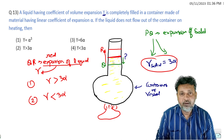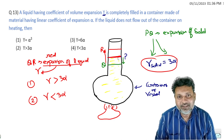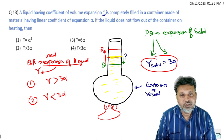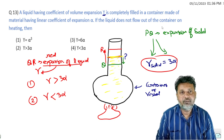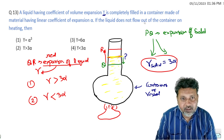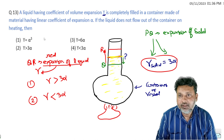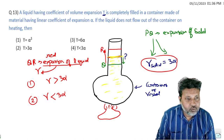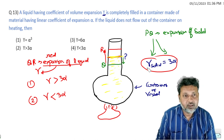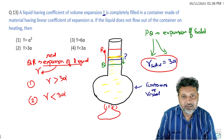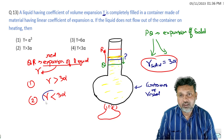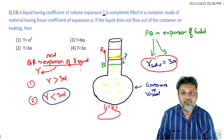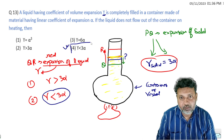पानी flow करके बाहर जा रहा - इस level से ऊपर चला जा रहा मतलब flow कर जा रहा बाहर। तो condition है: if the liquid does not flow out on heating, liquid बाहर नहीं जा रहा, इस level पे ही रुक जा रहा। इसका मतलब है कि gamma की value 3 alpha से कम या equal होगी - तो यह option correct हुआ।